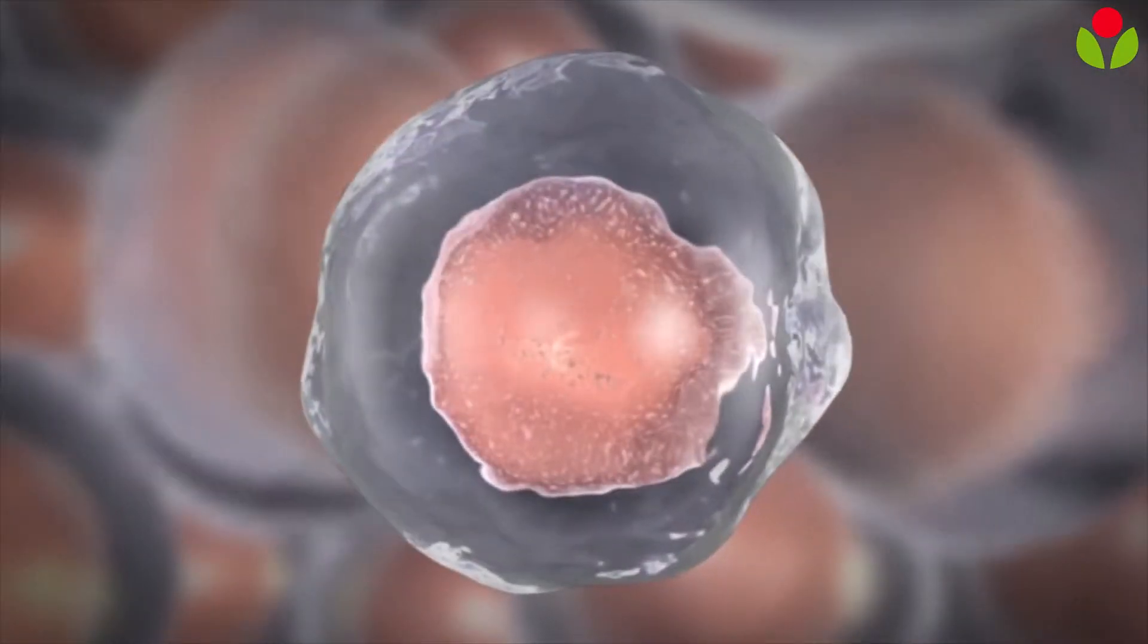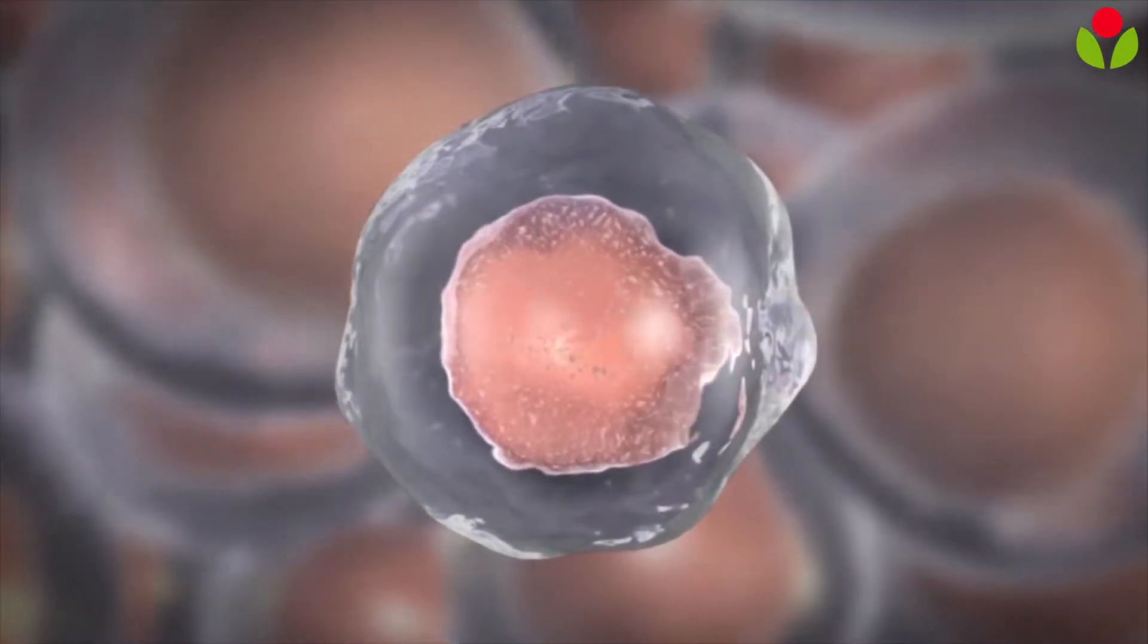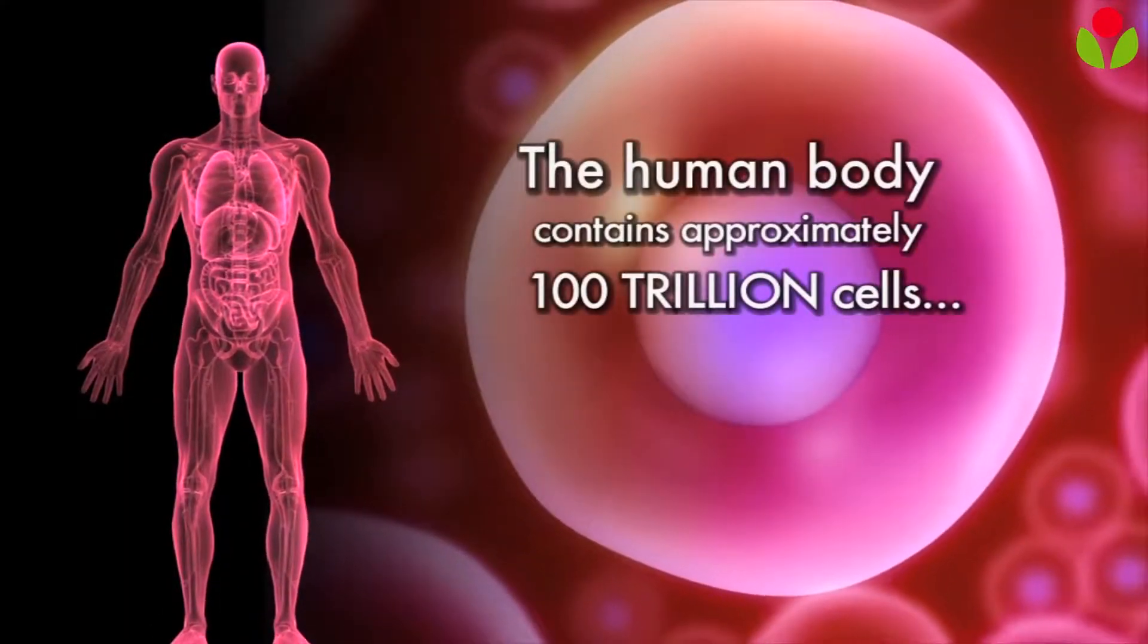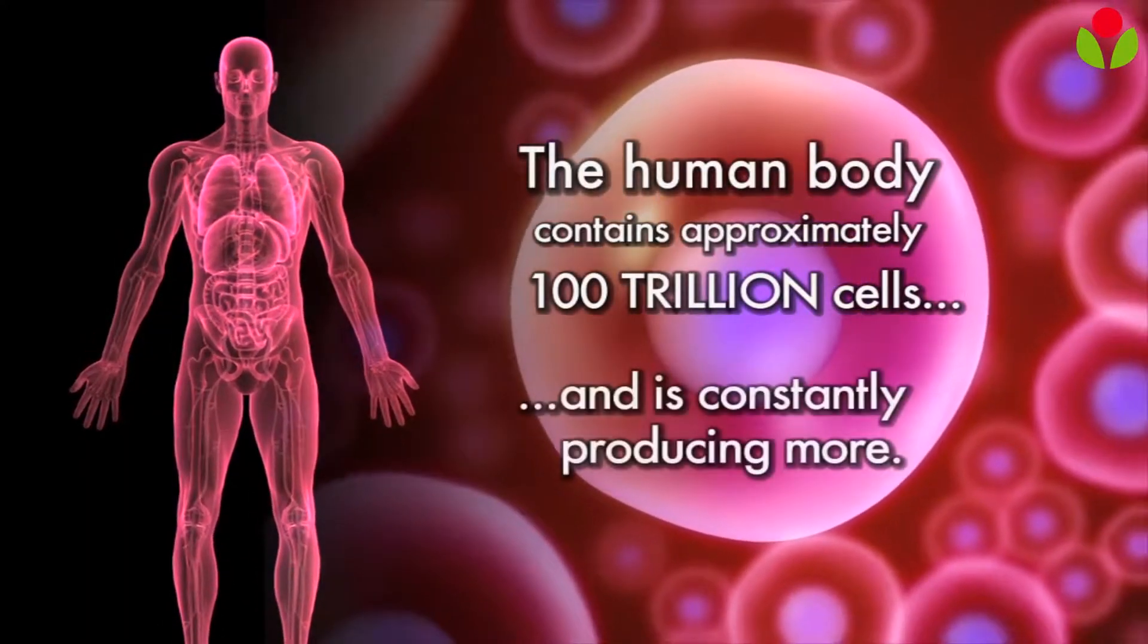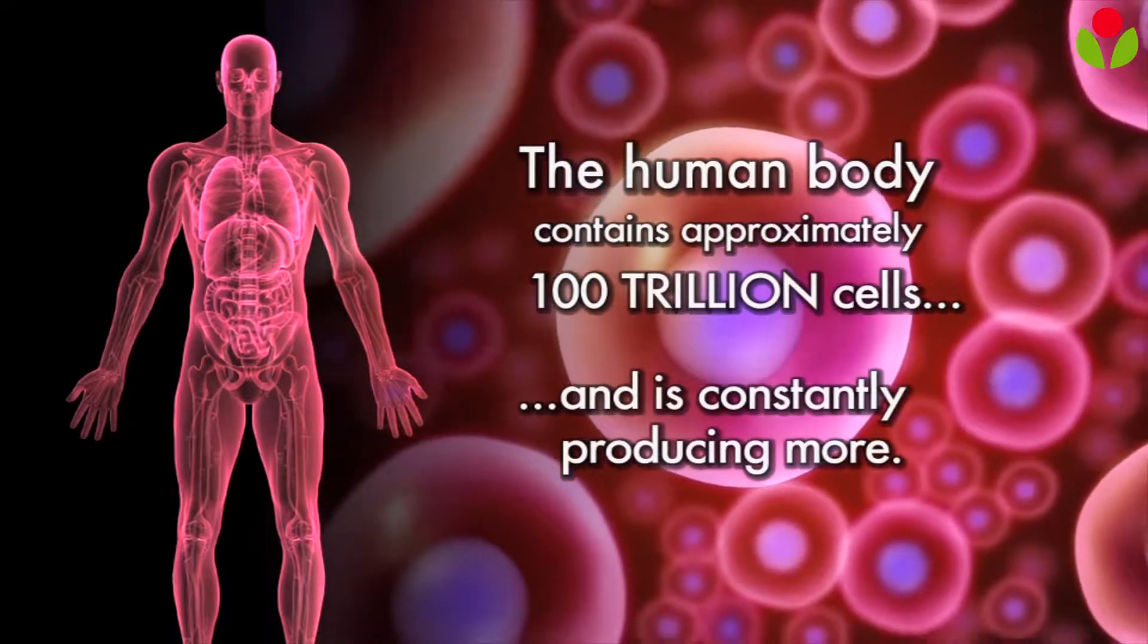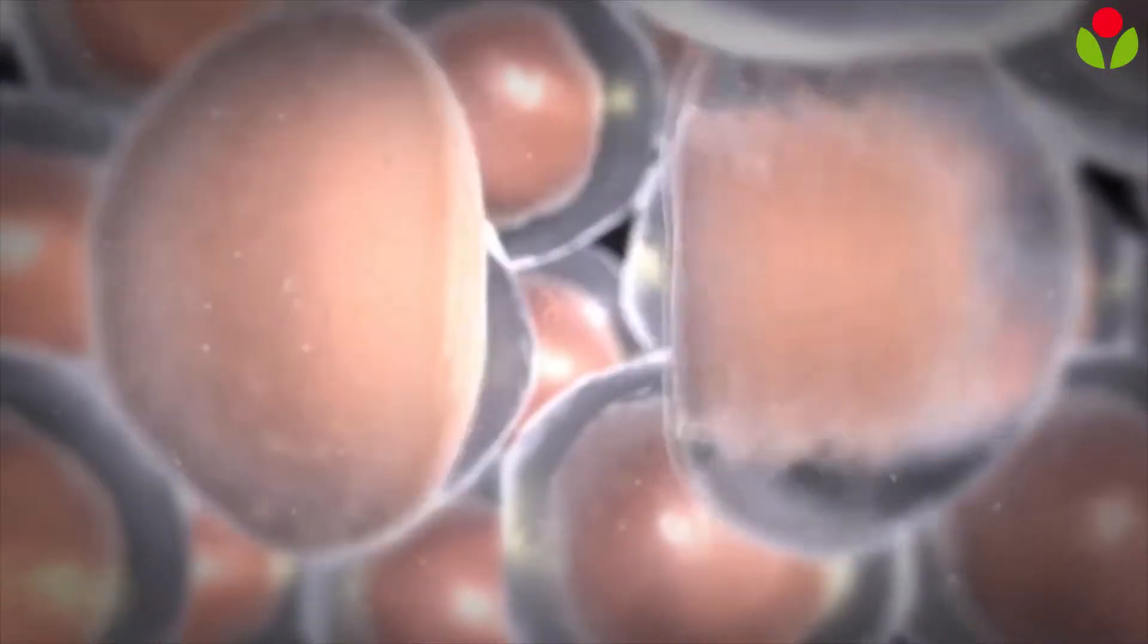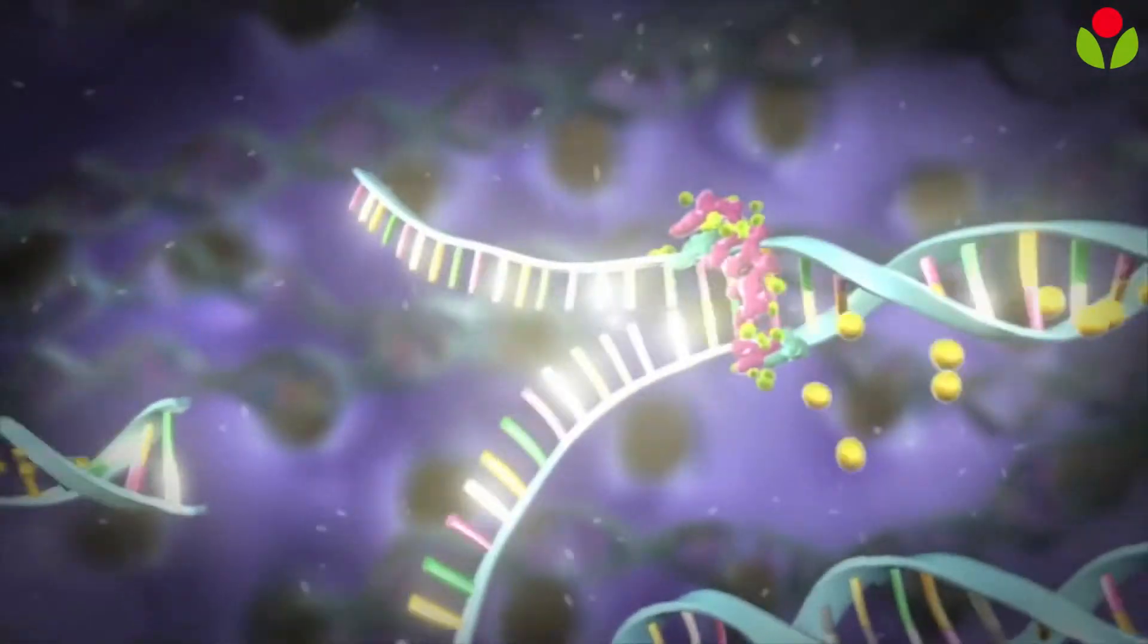The cell is the functional basic unit of life, often called the building block of life. Humans have about 100 trillion cells. Your body is constantly producing new cells. In this program we will discuss how cells divide, how chemotherapy affects cells that are dividing, and how chemotherapy affects cancer cells.